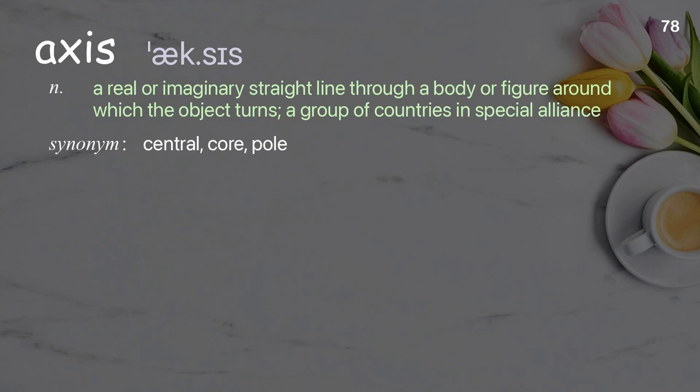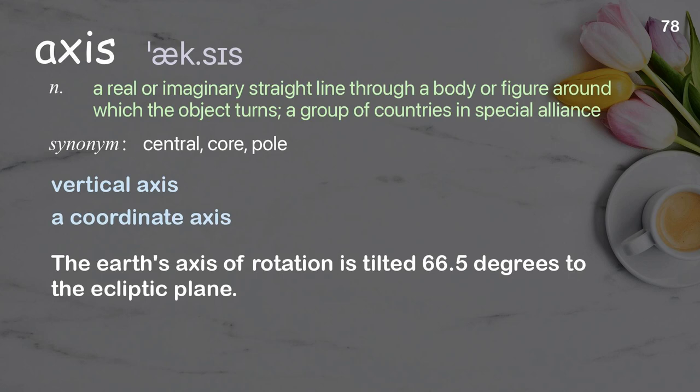Axis: A real or imaginary straight line through a body or figure around which the object turns; a group of countries in special alliance. Examples: Vertical axis. A coordinate axis. The Earth's axis of rotation is tilted 66.5 degrees to the ecliptic plane.